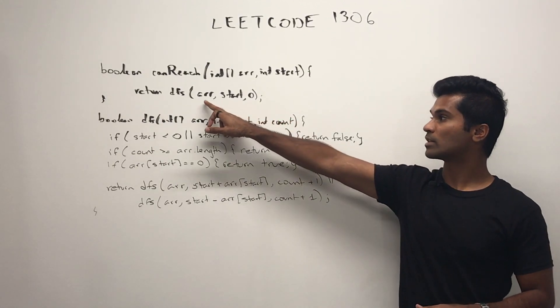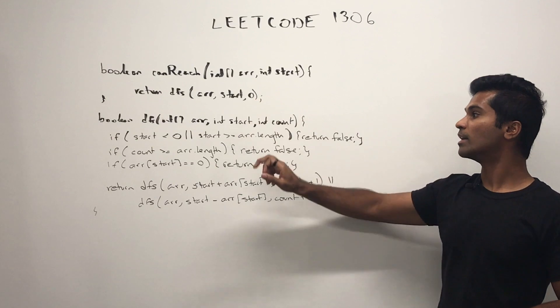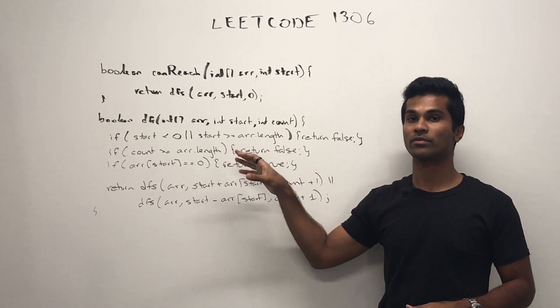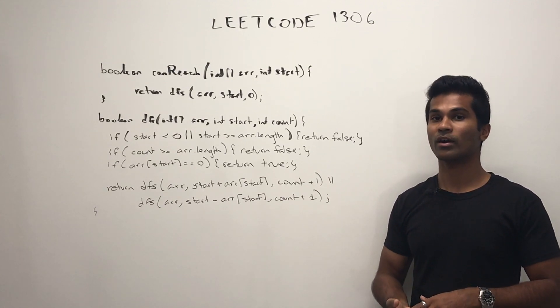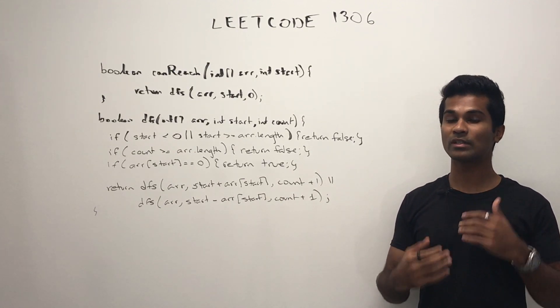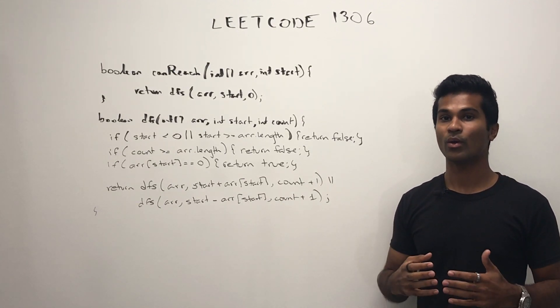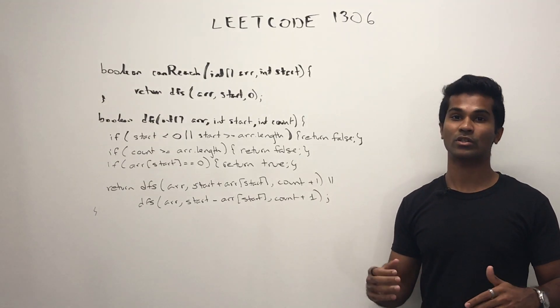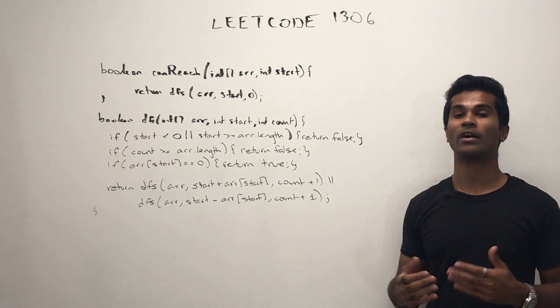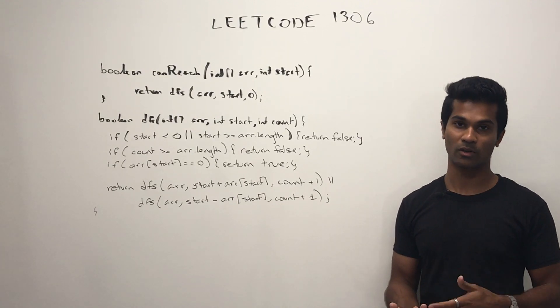Initially we just have array start and zero. Once we're in our recursive function, we return false if we're out of bounds or we've visited a total number of states which is greater than or equal to the total number of spots in the array, and we can just return true if we finally found a spot whose value is equal to zero.